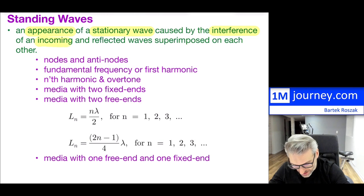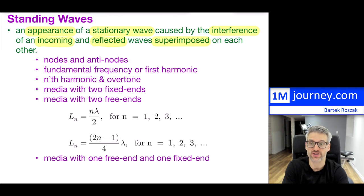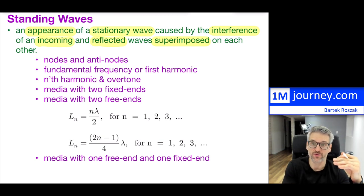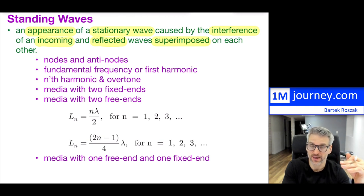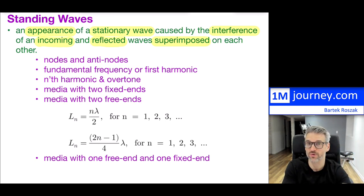You have an incoming wave and a reflected wave superimposed on top of each other. This does not happen for all frequencies — it has to hit a very key frequency, which we typically call the fundamental frequency or the first harmonic, where this notion appears. Any multiple of the fundamental frequency — multiply it by two, three, four — these are called second harmonic, third harmonic, and so on. At those multiples, you will have this appearance of a standing wave.